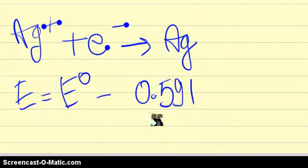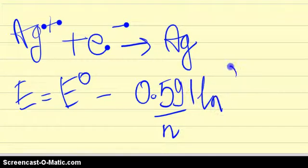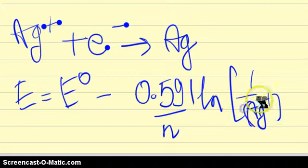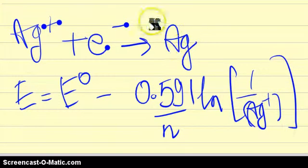I am just going to write the general form of the NERST equation with n electrons. Alright, so now this is the NERST equation for the reaction that I have written.